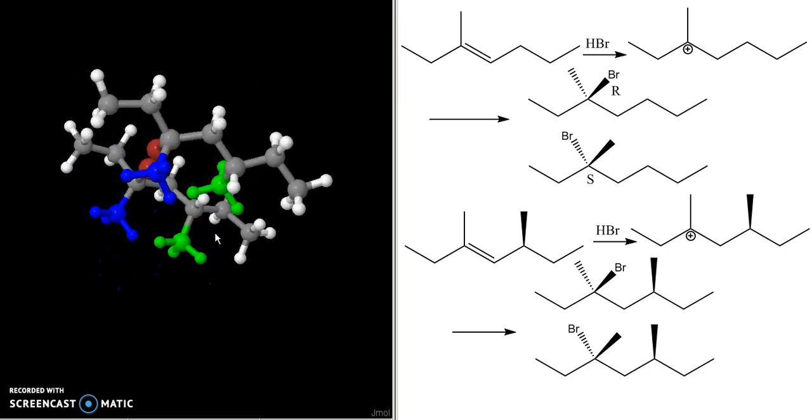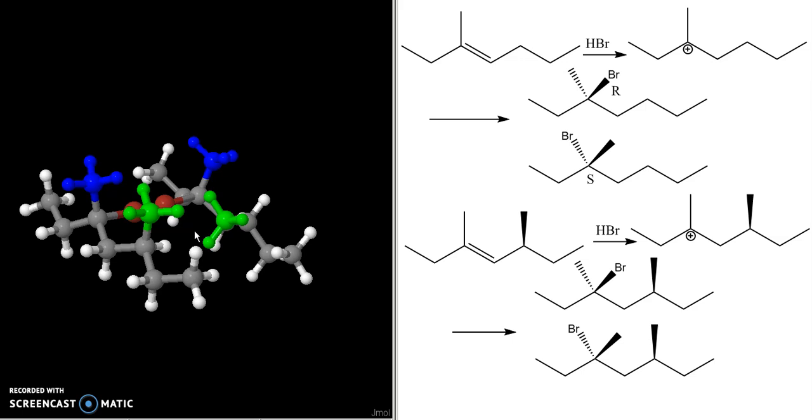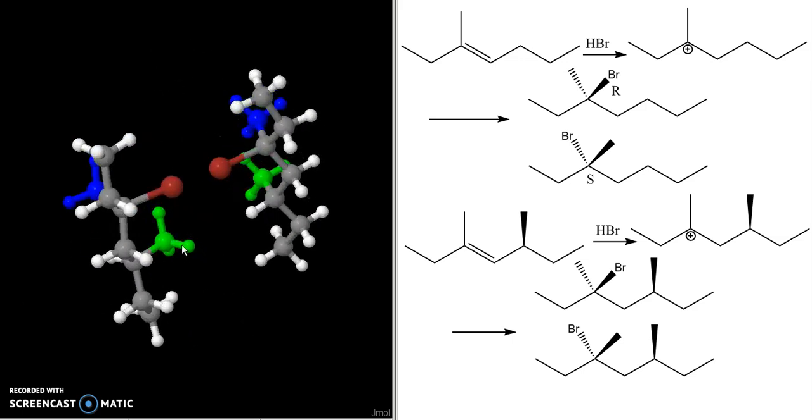You can see that one has the methyl group sticking up, one has it sticking out. They don't line up. There's no mirror plane through here. They're not mirror images. Stereoisomers that are not mirror images of one another are diastereomers, so these two are diastereomers.